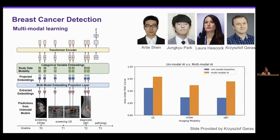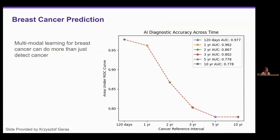This network can also be used to predict whether someone will experience breast cancer in the future. It remains accurate in its predictions for up to 5 to 10 years. This really shows that synthesis of multimodal information can lead to strong results and predictions that humans wouldn't even attempt to make, and these kinds of risk predictions could be used to better individualize patient management.